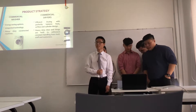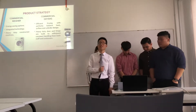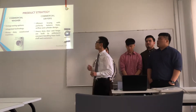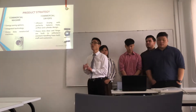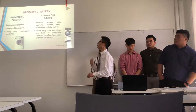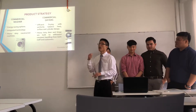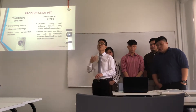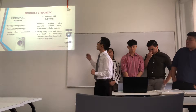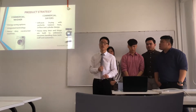My name is Kenneth and I am going to talk about the marketing mix. For the product strategy, Laundry Bar has two main products: commercial washer and commercial dryer. The commercial washer has energy-saving options with integrated technology to reduce water consumption and washing time. The dryer features perfectly balanced heat, a slender design, and airflow, allowing it to dry clothes faster. Both washer and dryer have heavy-duty durability, lasting longer than usual.